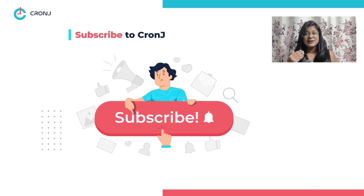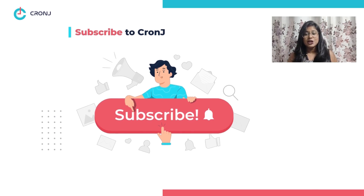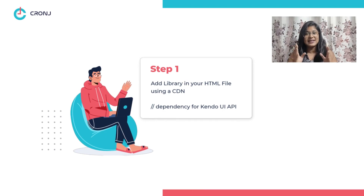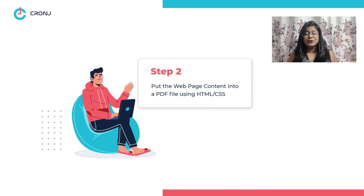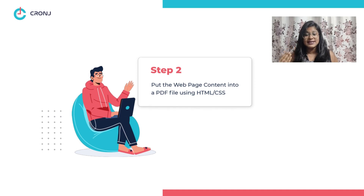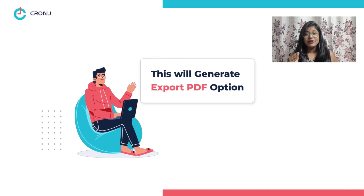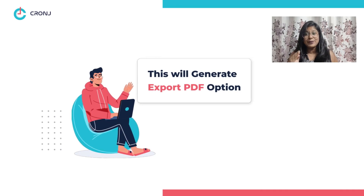Firstly, we will add the library in your HTML file using a CDN. Secondly, we will put the web page content that we want to export into a PDF using HTML CSS. Thirdly, in the script tag we will write a function using the Kendo UI API and one of its features, drawDOM. This will generate the option to export PDF files.